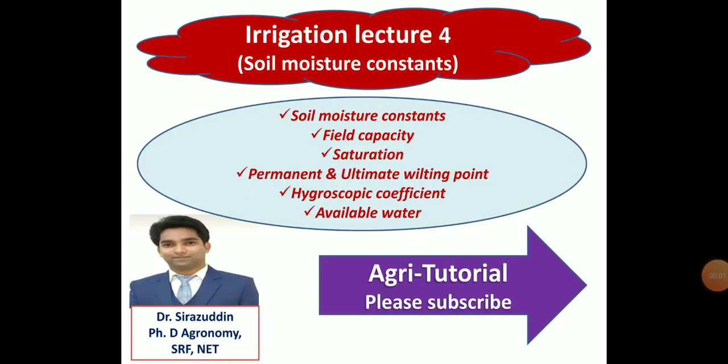Hello dear students, this is Dr. Sirajuddin again. Today we have come up with irrigation lecture 4, and in this lecture we will be dealing with soil moisture constants. You'll be getting information about field capacity, how it differs from saturation, permanent and ultimate wilting point, hygroscopic coefficient, available water, and so on.